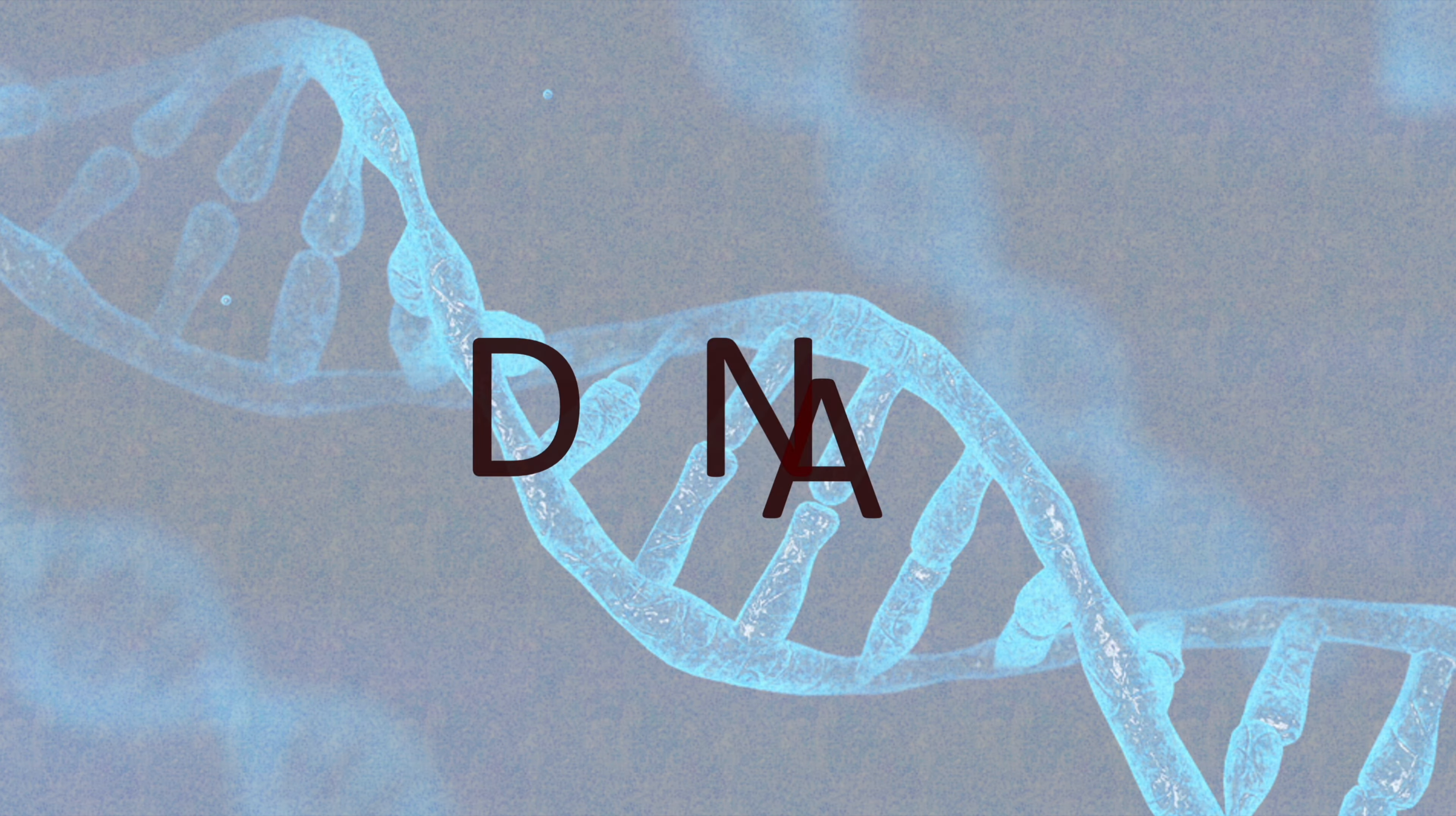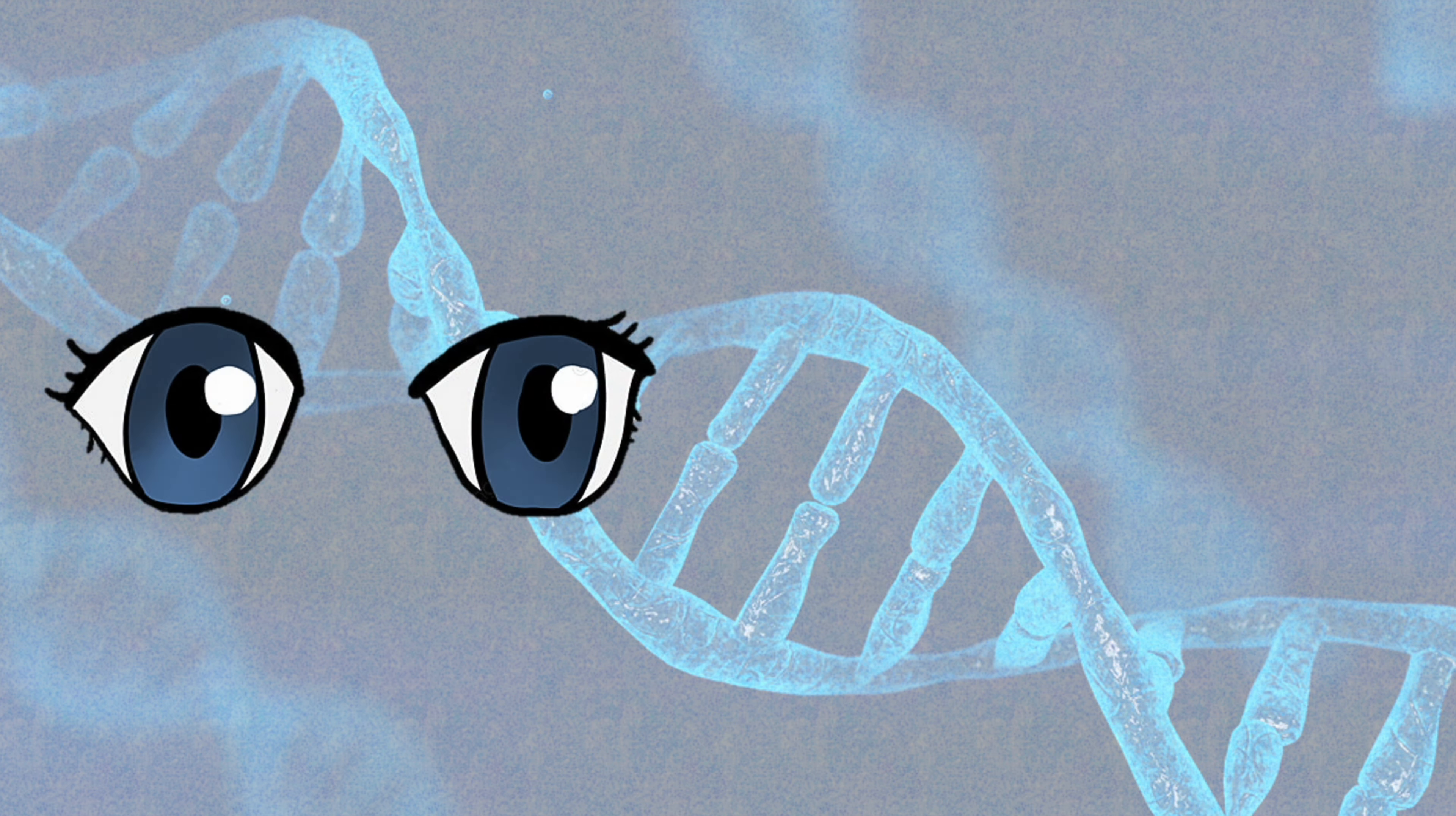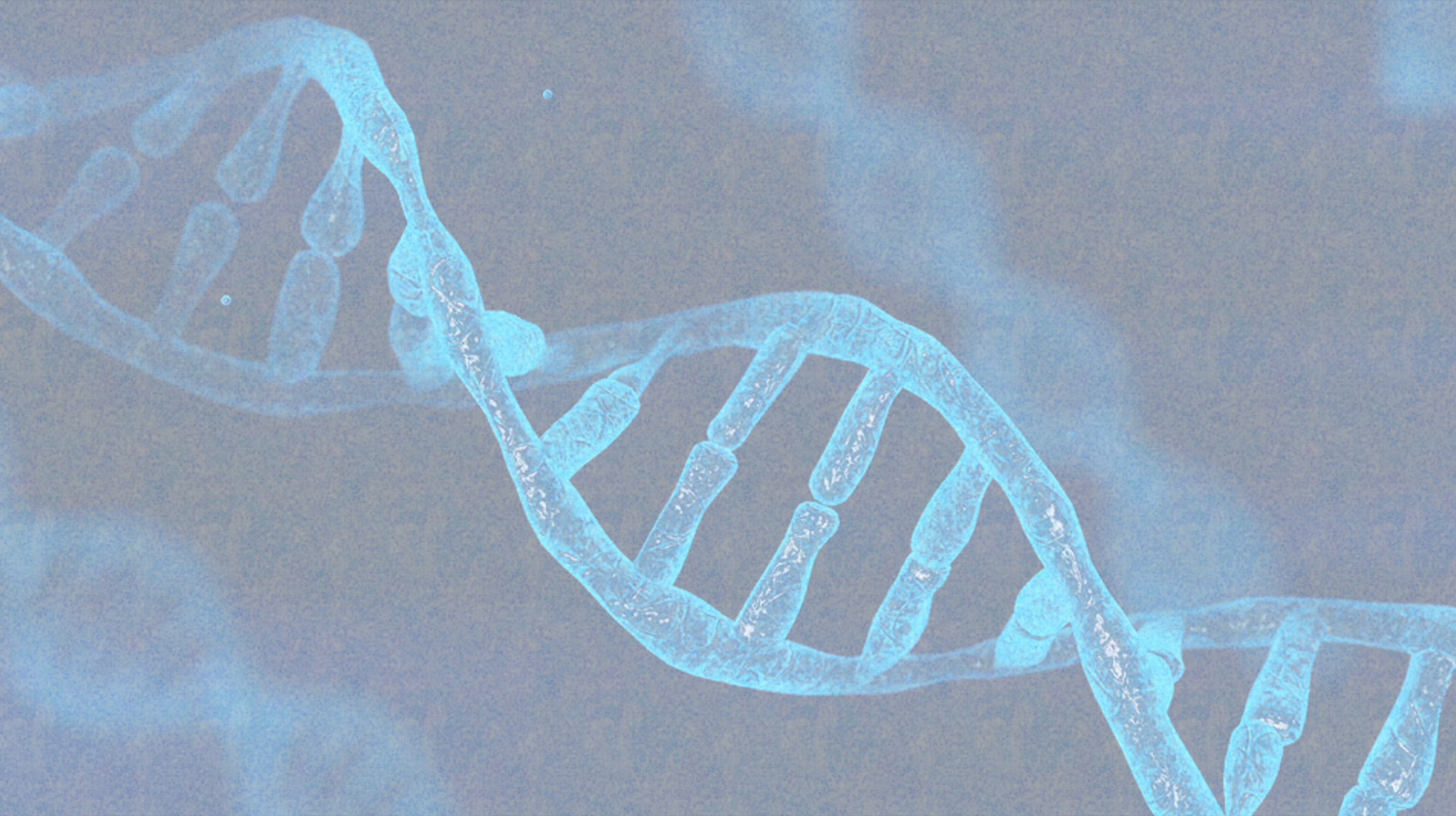But what is DNA? Short for deoxyribonucleic acid, it is a molecule that codes for the entire body. It codes for every characteristic that living beings possess, such as eye color and hair color. It was first discovered in 1869 by Friedrich Mischer, a Swiss scientist.